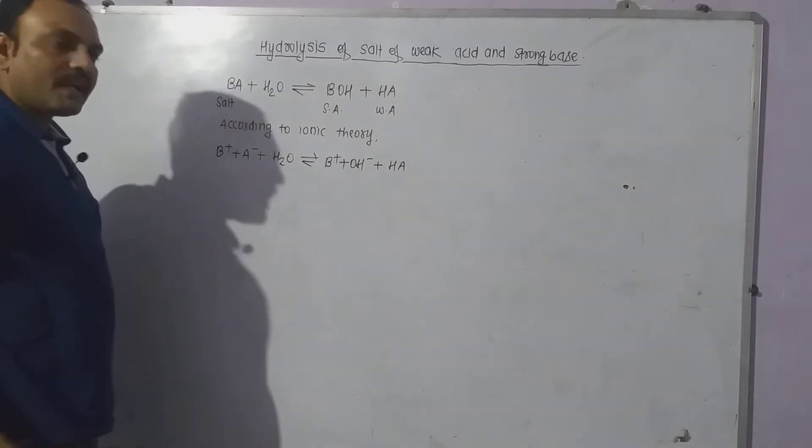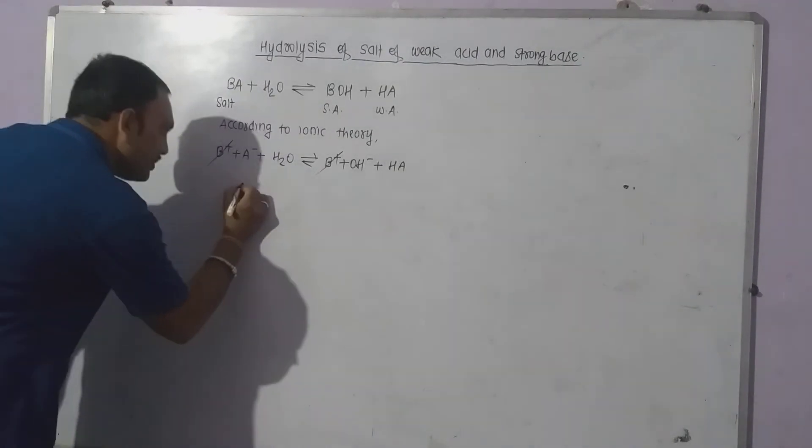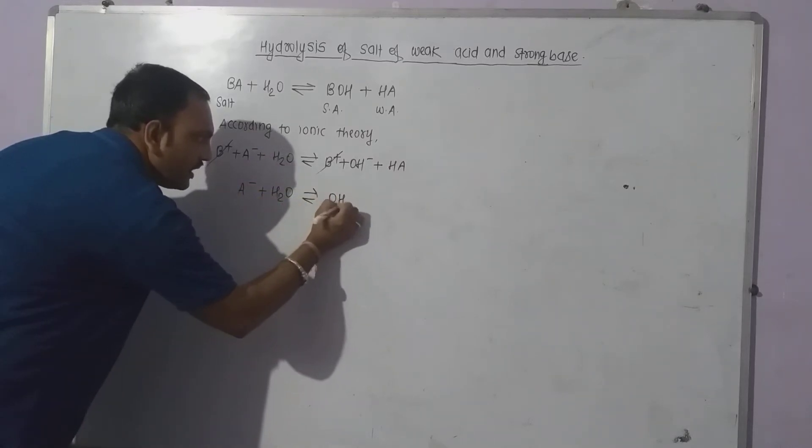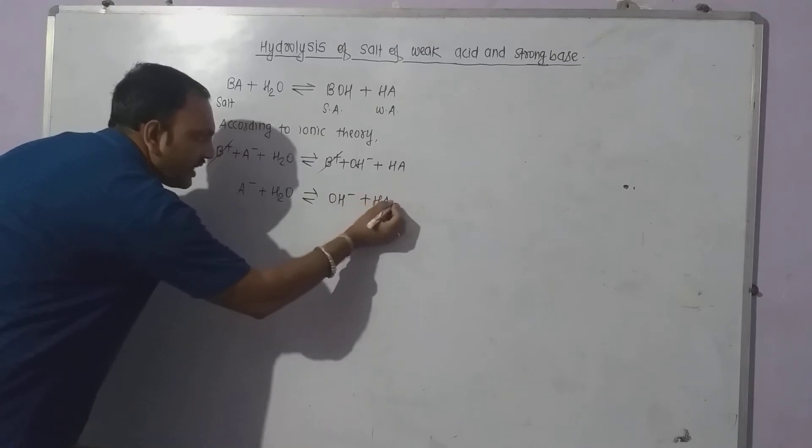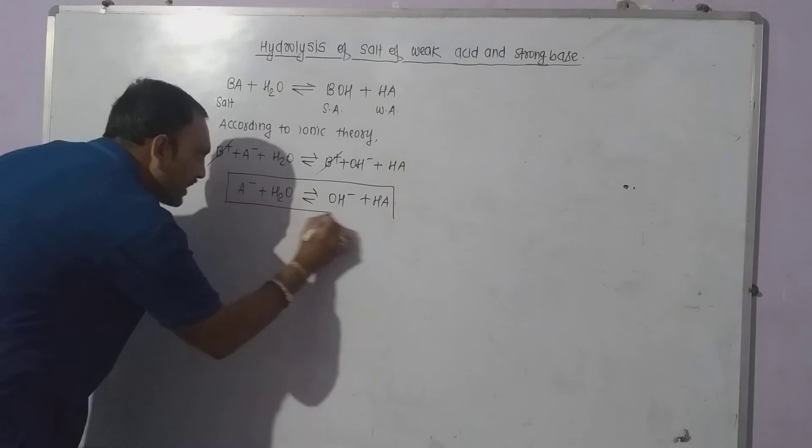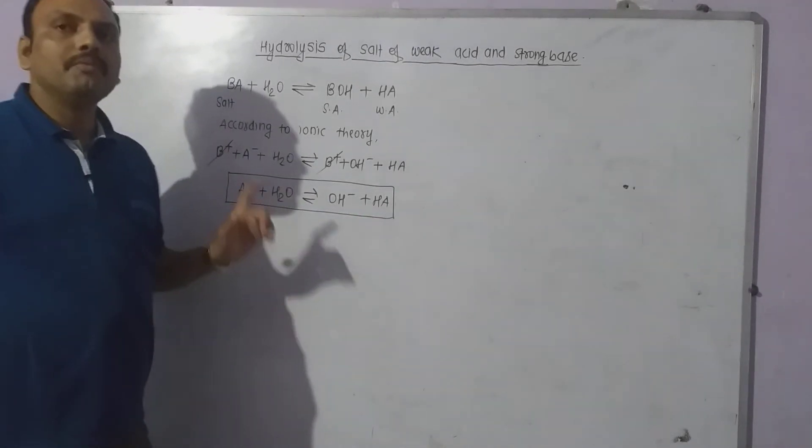The B+ ions are common to both sides so this gets cancelled. What remains: A- + H2O gives OH- + HA. This is actually a hydrolysis reaction because A- ions, which are one of the ions of salt, react with water producing basicity into the solution.